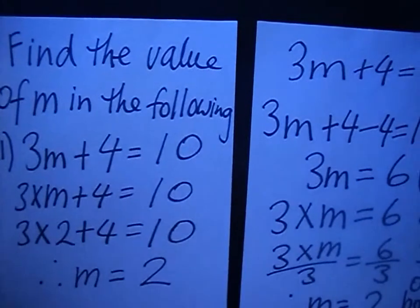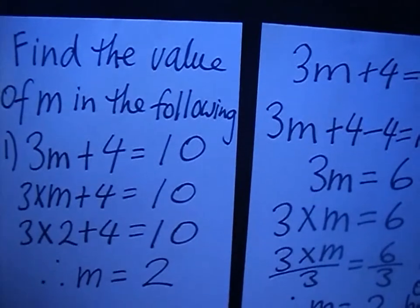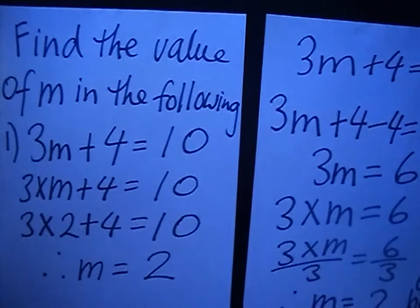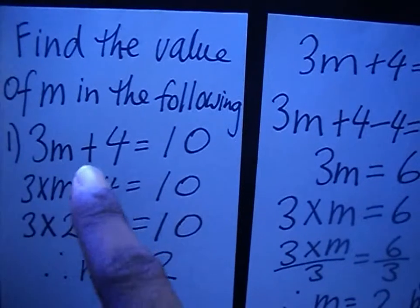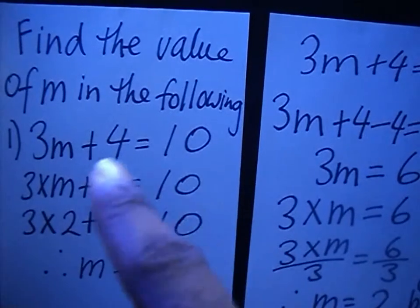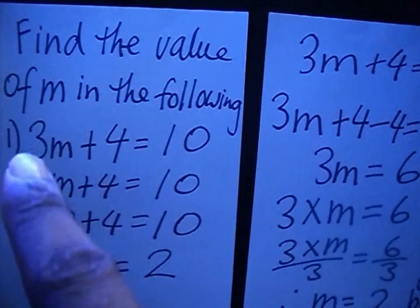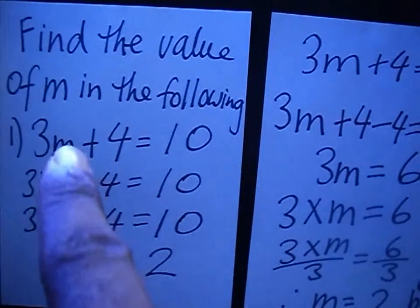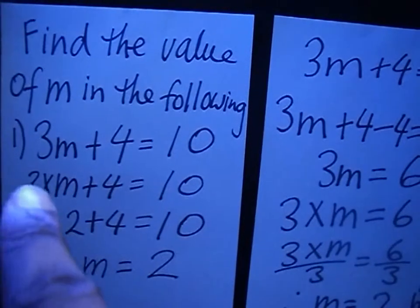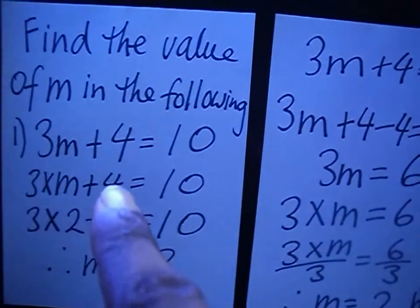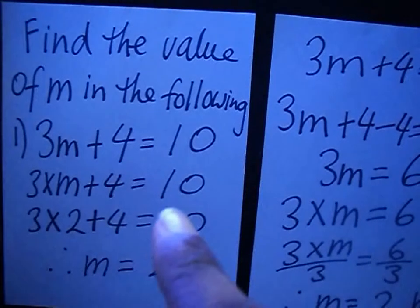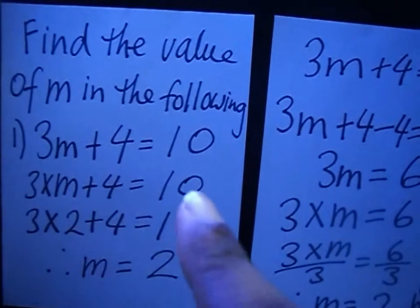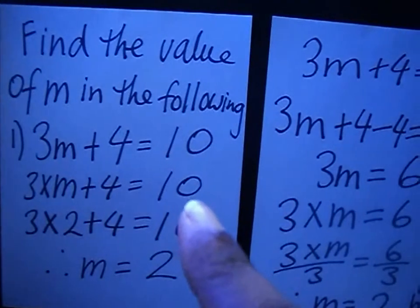Find the value of m in the following. You have a combination of multiplication and addition: 3m plus 4 is equals to 10. When you have a letter and a number together, it means multiplication — 3 times m. Plus 4 is equals to 10. What number multiplied by 3, and then add 4, will give you 10?